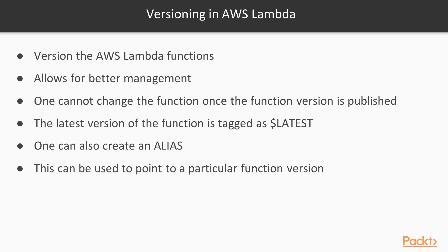So, versioning in AWS Lambda. Just like in any other programming language, developers use multiple versions of modules or their code. You could have versions in the development phase and versions in the production phase. AWS Lambda has that same functionality of versioning your Lambda functions, which allows for better management of your code.